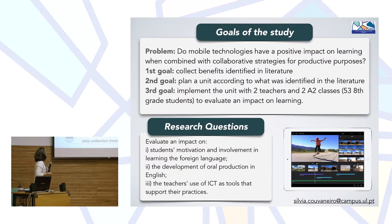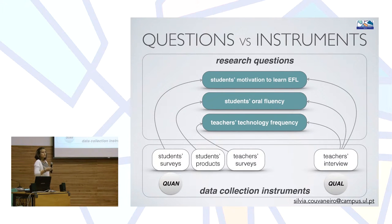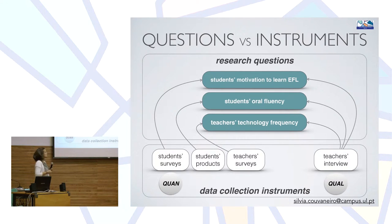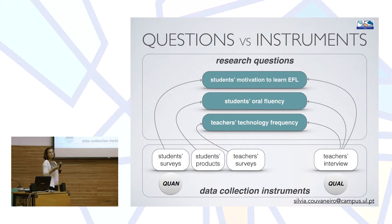This slide explains the relationship between the research questions and the data collection instruments we used. We started with the students' surveys to answer the first research question. The students' products helped with the second research question, the teachers' surveys addressed the third question, and at the end of the study we conducted an interview with both teachers in order to have contributions for all the research questions.